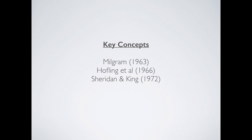Key concepts: Milgram's study, 1963; Hoffling and colleagues, 1966 — the nurses study; and Sheridan and King with the puppy dogs. All of these tell us one thing: obedience exists, more people than you would think obey, and this can lead to some very nasty repercussions. That's everything for today. We're going to come back in the next video to look at the factors surrounding obedience. Thanks so much for watching, and we'll see you next time.